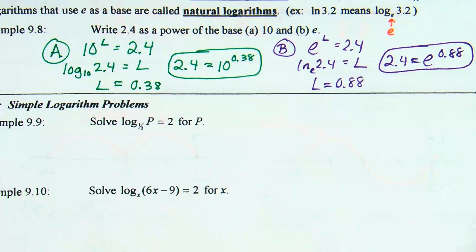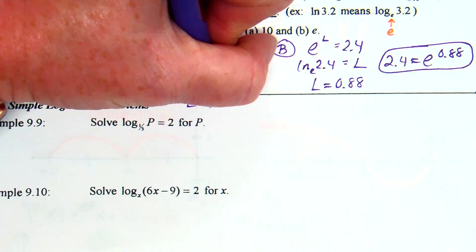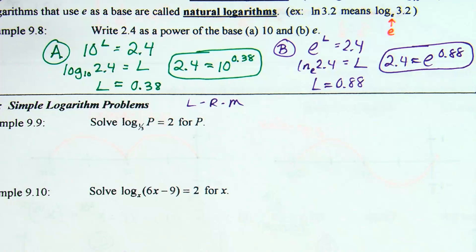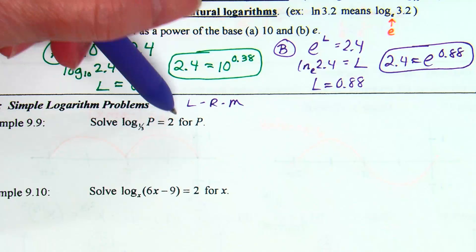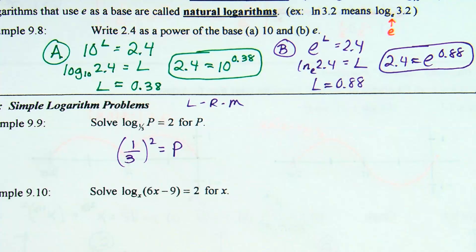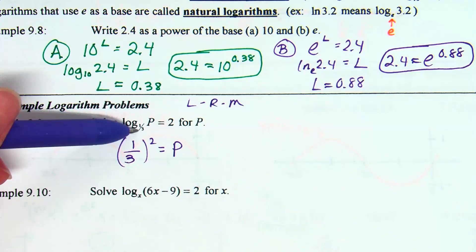Example 9: log base one-third of P equals 2 — solve for P. Using left-right-middle: one-third to the second equals P. That gives P equals one-ninth. Wow, that was easy.